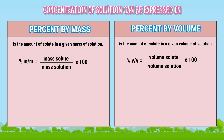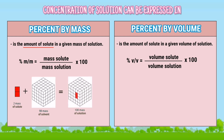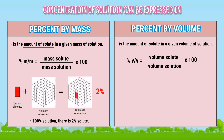This can also be understood in this illustration. Two mass of solute plus ninety-eight mass of solvent equals one hundred mass of solution. The amount of solute in this example is two mass in a total of one hundred mass of solution. Therefore, the concentration of the solution is two percent. Thus, in every one hundred mass of solution, there is two mass of solute, or in one hundred percent solid solution, there is two percent solute.